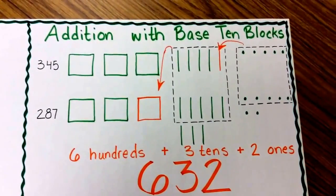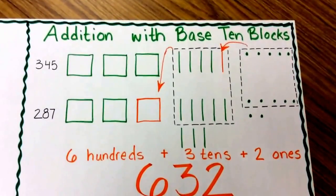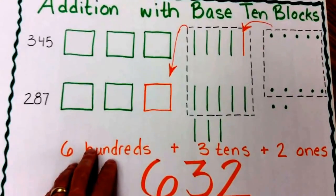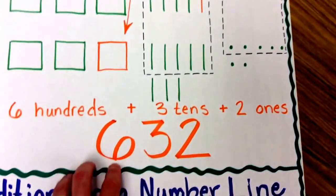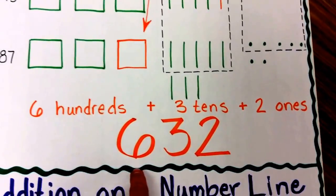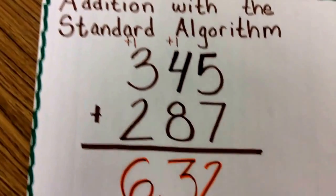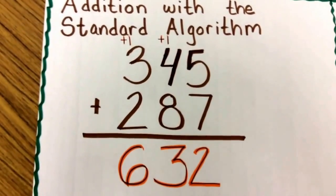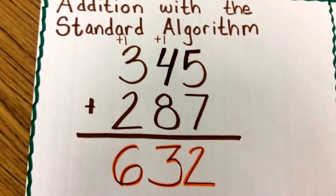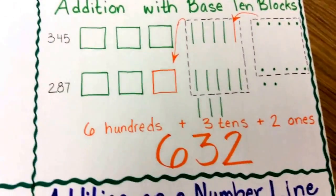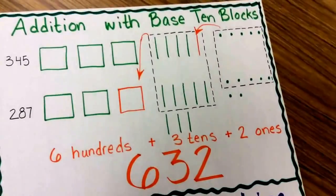Now that I've combined and regrouped all of my parts in my addition with the base ten blocks, I can see that I had six hundreds plus three tens plus two ones, all brought together to equal a sum of 632. And there are more ways of adding than just with the standard algorithm or with base ten blocks.